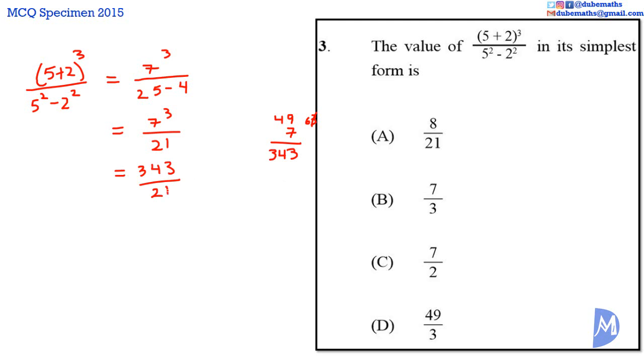We need to simplify this further. What number can go into both 343 and 21? 2 cannot, 3 cannot, 4, 5, 6 cannot, 7 can. We know that 343 is 49 multiplied by 7, and 7 threes are 21. So canceling, dividing both by 7, we get 49 over 3. The answer is D.